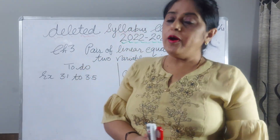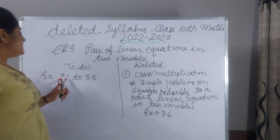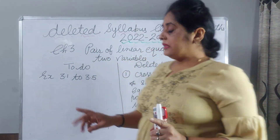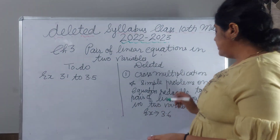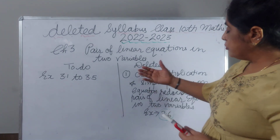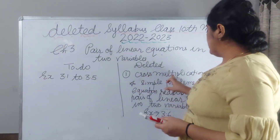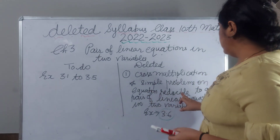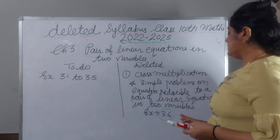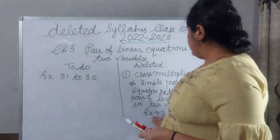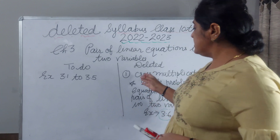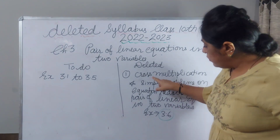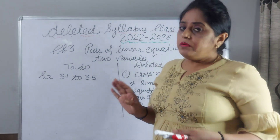In Chapter 3, you have to do exercise 3.1 to 3.5. There are 6 exercises in total; exercise 3.6 is deleted from your syllabus. The deleted portion is: cross multiplication method and simple problems on equations reducible to a pair of linear equations in two variables. The elimination method you have to do, but the cross multiplication method you do not have to do.